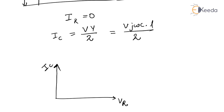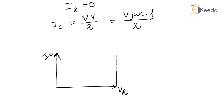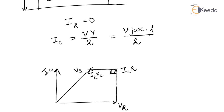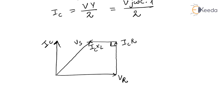ICr is in phase with IC. Adding ICr and ICxL, where ICxL has a 90-degree component, the sum of Vr plus the voltage drops ICR and ICxL gives the sending end voltage Vs. From this phasor diagram, it is clearly seen that Vs is less than Vr.